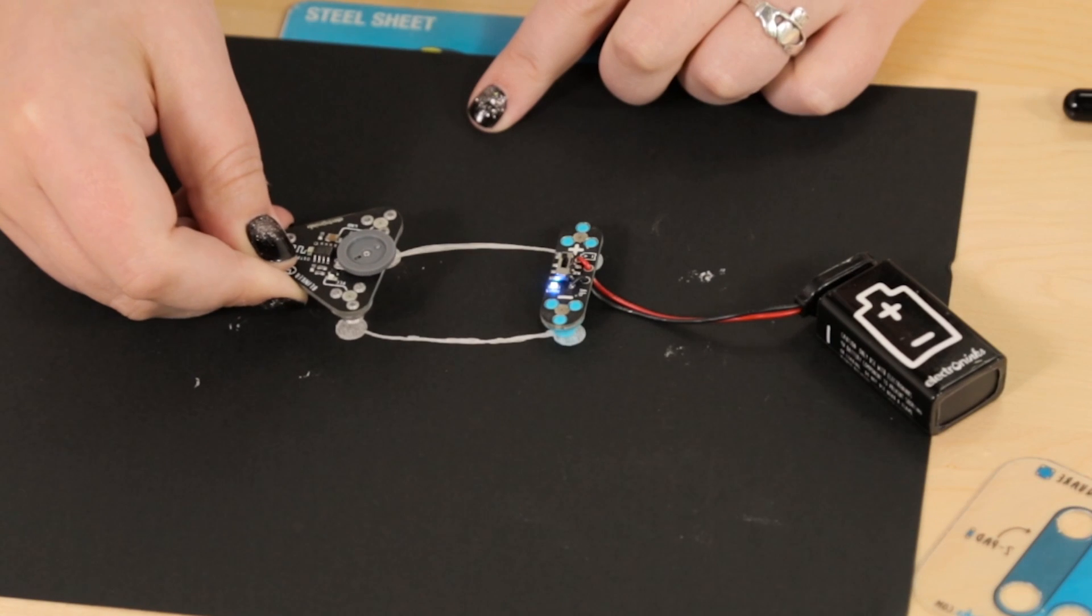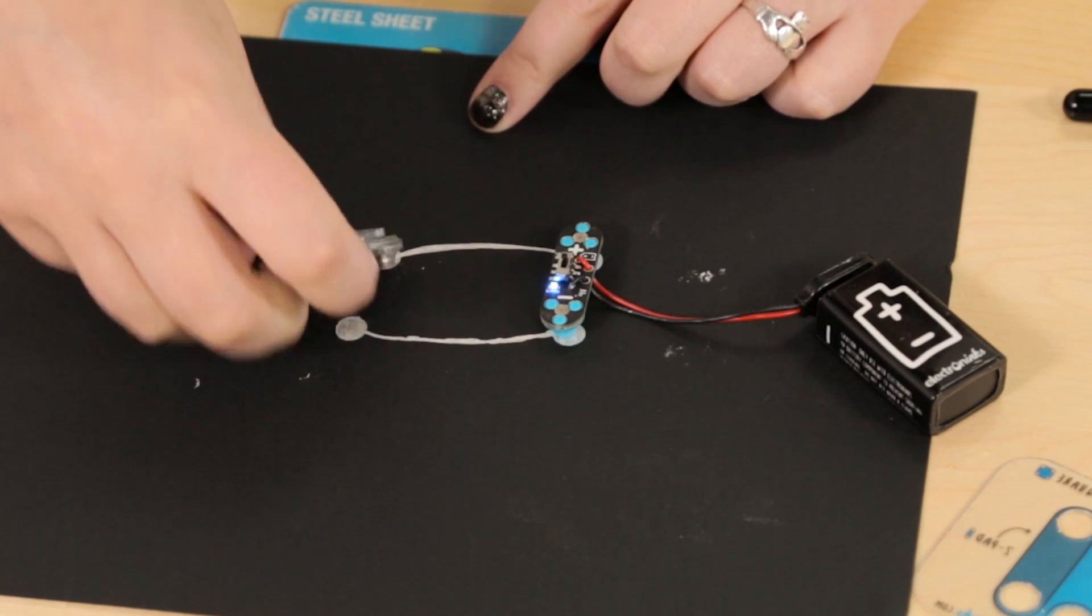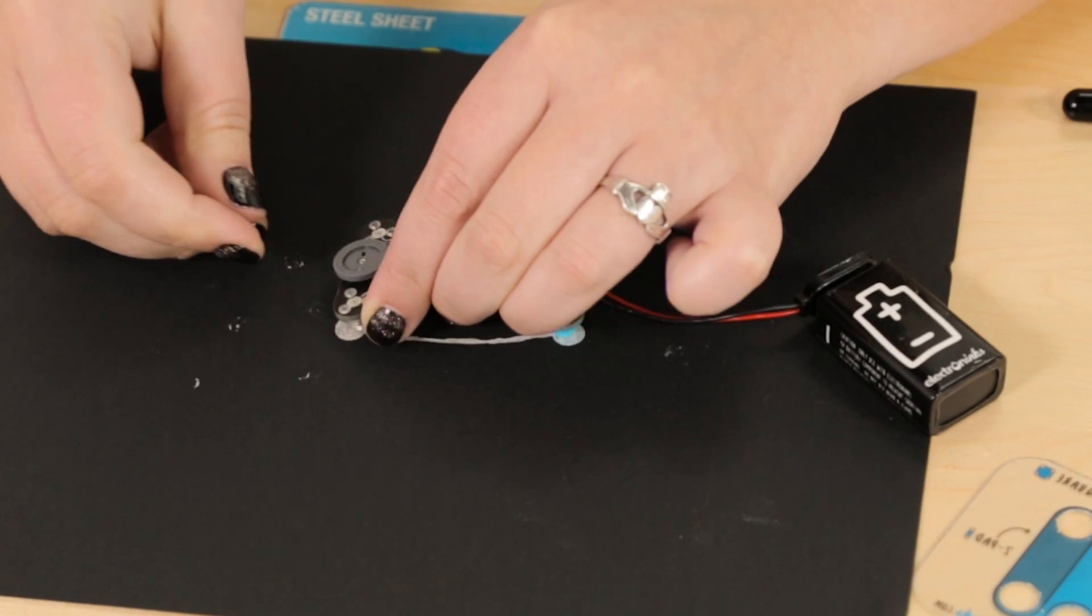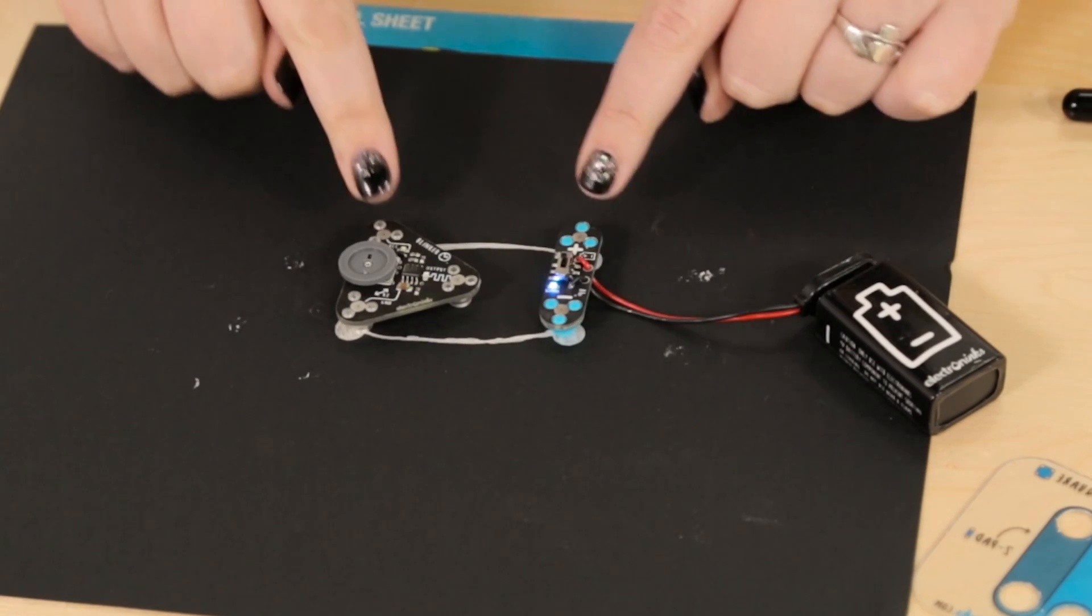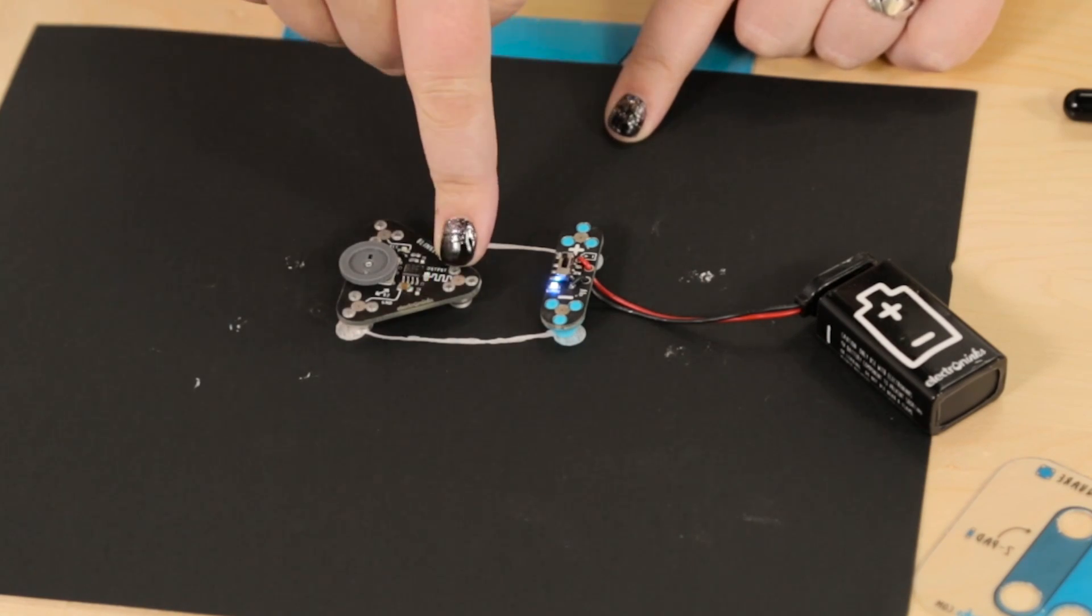So if I put this on here the opposite, I get a red short light. Now if I put it on here correctly, so ground goes to negative and VCC goes to positive, I get a flashing green light to let me know that I did it right.